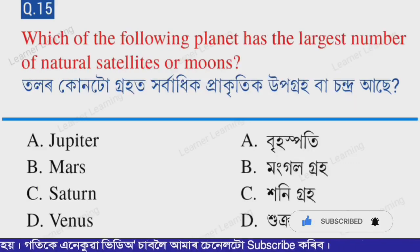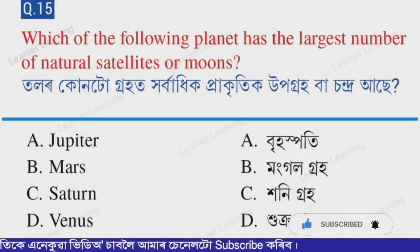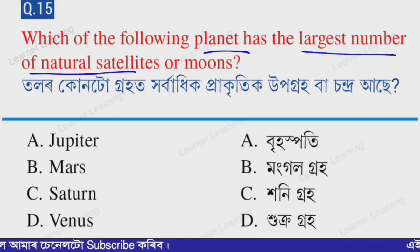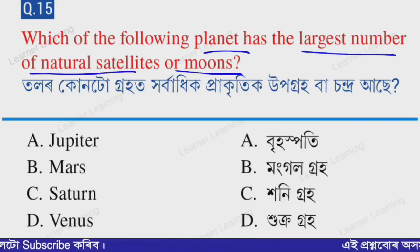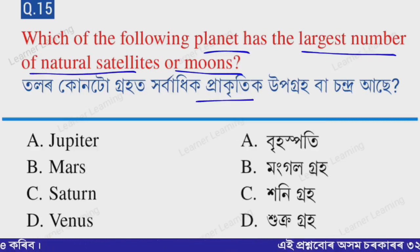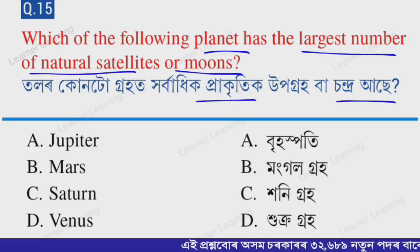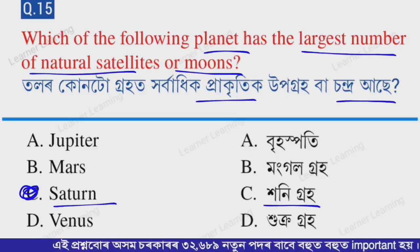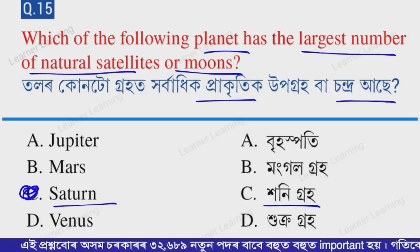Next question: Which of the following planets has the largest number of natural satellites or moons? Select from the options. Option C — Saturn. Saturn has the most natural satellites (moons) in our solar system.